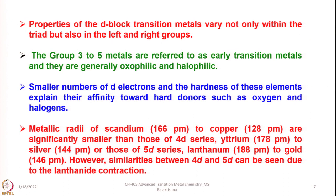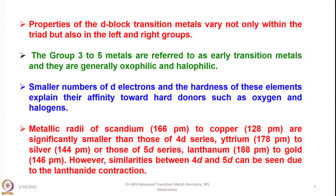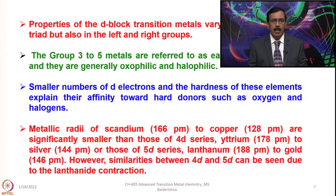Group 3 to 5 metals are referred to as early transition metals and they are generally oxophilic and halophilic. Those having electronic configurations of D1, D2, and D3 — having up to 5 electrons in their valence shell considering the 2s electrons — are referred to as early transition elements. Once we cross manganese and go further right in the periodic table, they are considered late transition metals. The smaller number of D electrons in early metals and their hardness explain their affinity towards hard donors such as oxygen and halogens, which is why they are called oxophilic and halophilic.